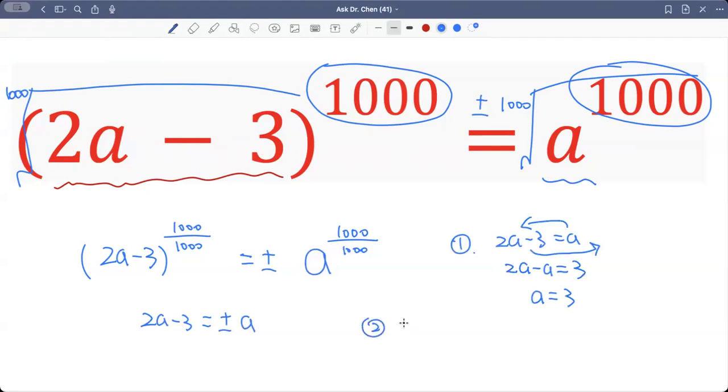Second, 2a minus 3 equals negative a. Then we add a on both sides, or we move negative a to this side, move negative 3 to the other side. So we get 2a plus a equals 3. That is 3a equals 3. Divide by 3 on both sides, so a equals 1. So we have two solutions.